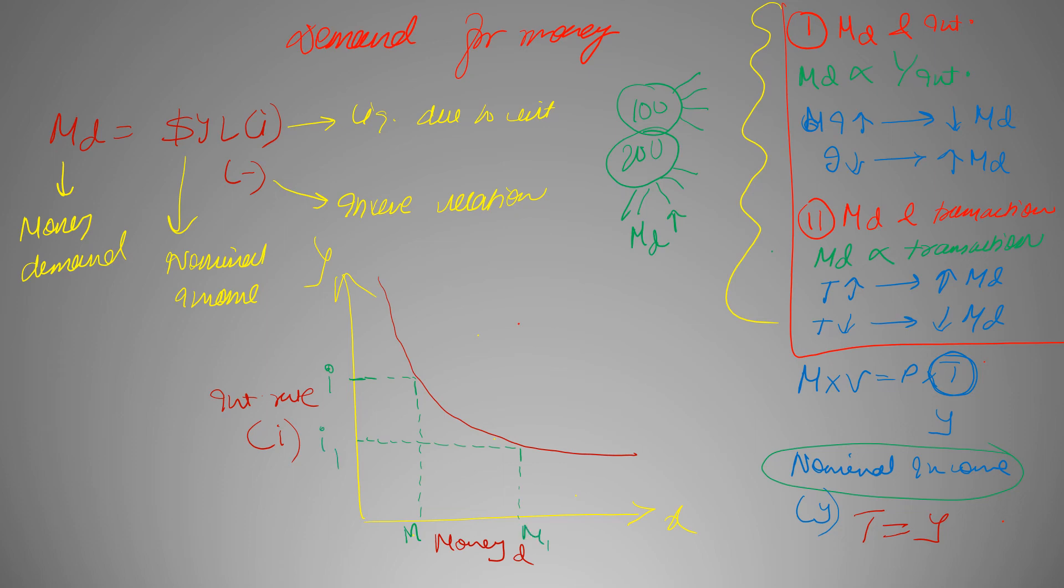And similarly, if we increase the interest rate, the money demand will decrease. Now, this particular graph which is the MD graph, it can shift rightwards in case of increase in income.